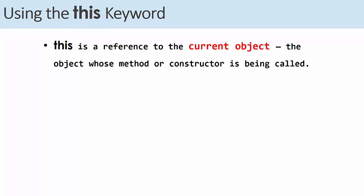First of all, what is the this keyword and why we need it? This actually is a reference to the current object. That's how we need to think about it. It's a reference to the object that is being used, the one whose methods or constructors are being called.